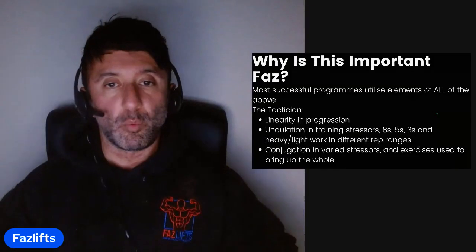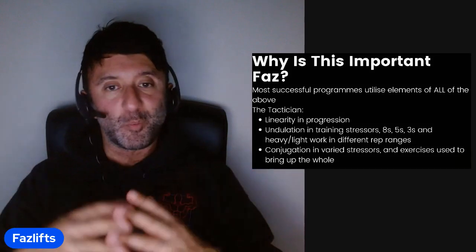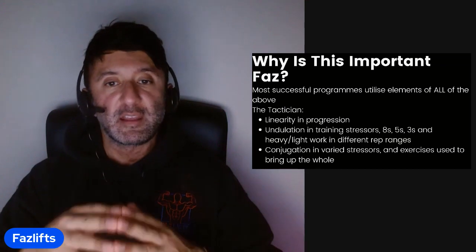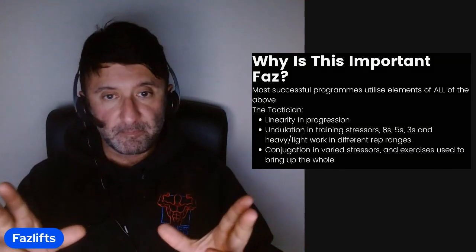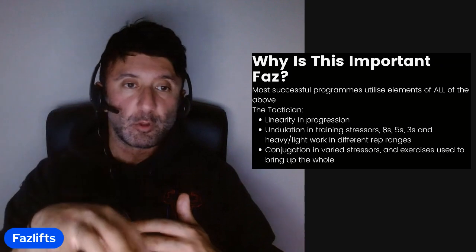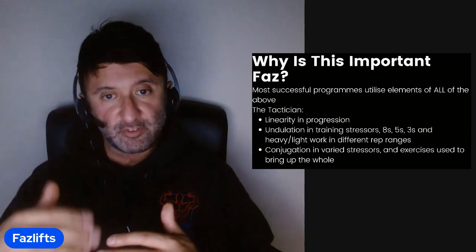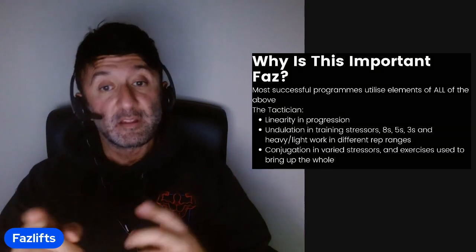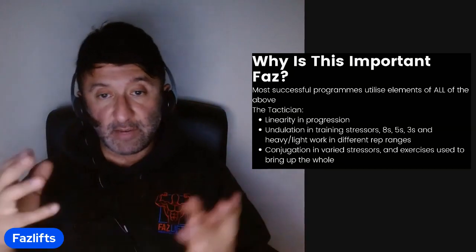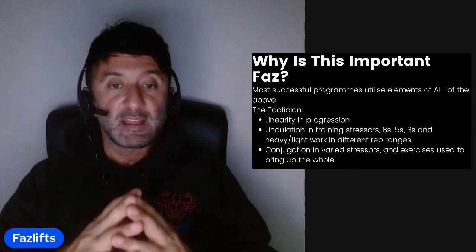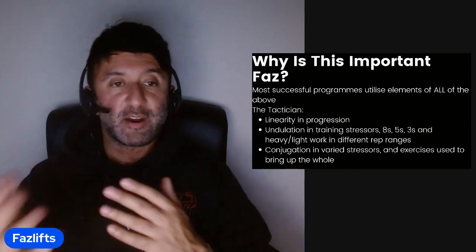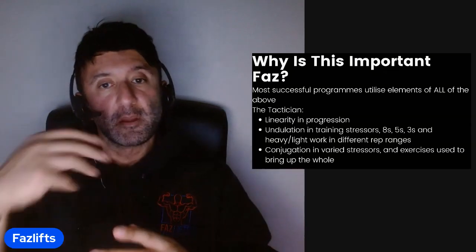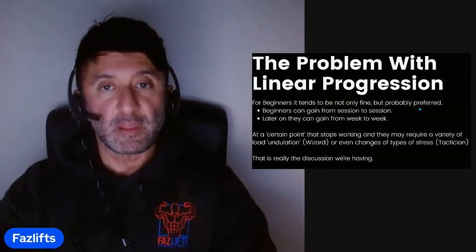So why is any of this important? Most successful programs utilize elements of all of the above. If we're going to talk about where people stall and what the solutions are, we need to understand the definitions first. My Tactician program, for example, has linearity in the progression, undulation in the training stresses — like the eights, fives, and threes and the heavy-light work — and conjugation in the variety of different stresses such as single repetitions, light work, and repetition work.